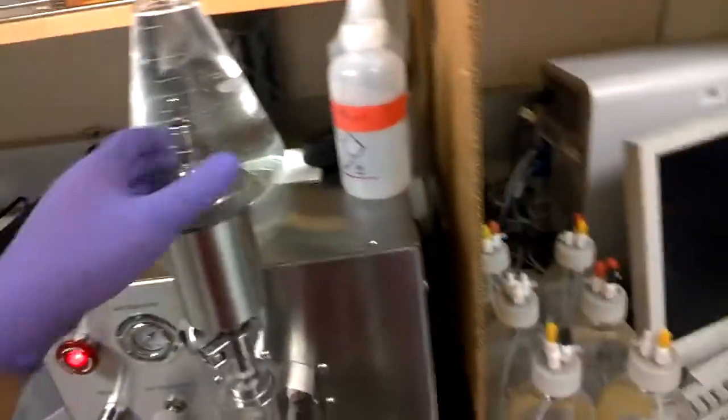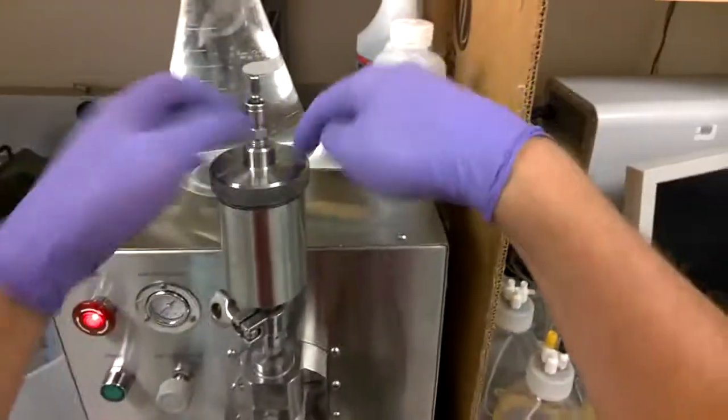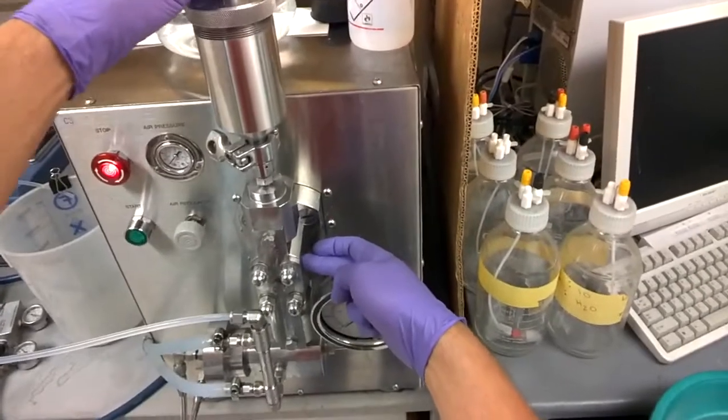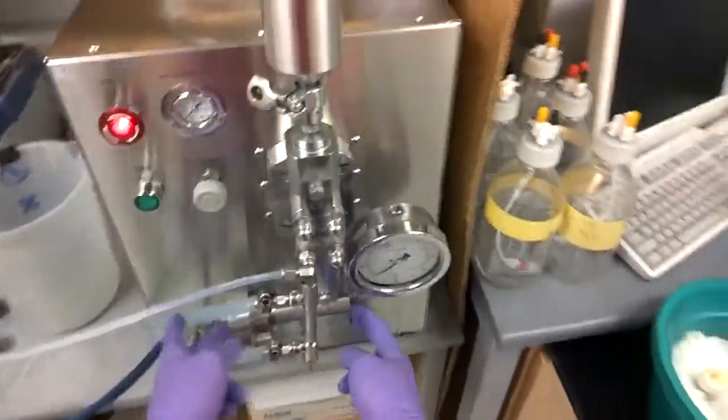So the way the Emulsiflex works is your sample goes into here, and then right there. And then there's a check valve, there's a pumping chamber here, and then another check valve, and this is where the actual license happens.